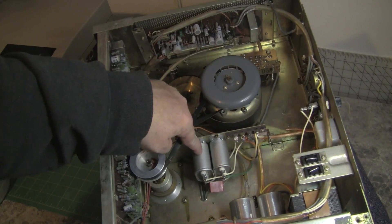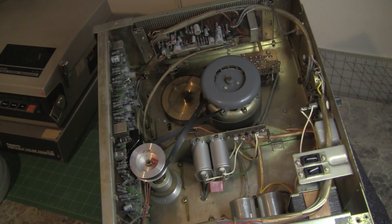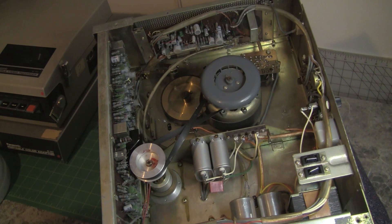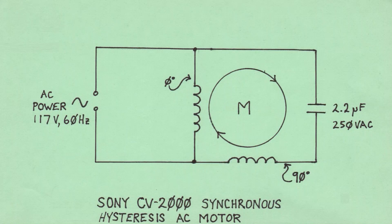Tape recorders of the 1950s through the 1970s used a type of motor called an asynchronous hysteresis motor. This type of motor rotates at a precise speed determined mostly by the AC line frequency and less by the AC line voltage — a very handy property if the design goal is to set the speed very accurately. Needless to say, the videotape recorder requires extremely tight speed tolerances.